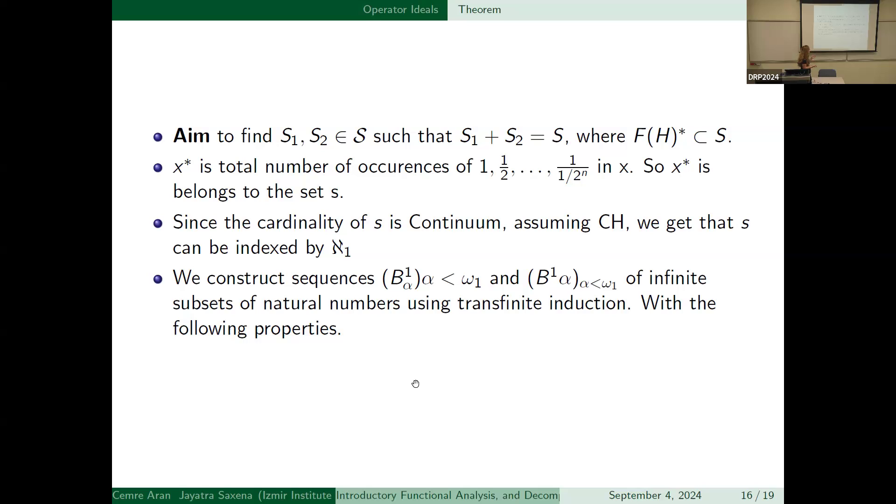Our aim is to find S_1, S_2 such that elements of lattice S, that is s_1 plus s_2 is equal to s, where F(H)* is S. And star means the total number of occurrences of one to one over 2^n. And x* belongs to the set S that we mentioned before. Cardinality of S is continuum. So, assuming the continuum hypothesis, we get that S can be indexed by cardinalium 1. We construct the sequences (B^i_α), α less than ω_1, of infinite subsets of natural numbers using transfinite induction with the following properties.